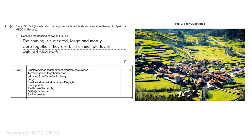When it comes to answering with two marks, that means two unique features — but you can write quite a long sentence covering loads of different features to make sure you get all the marks. For example: 'The housing was nucleated, large, and mostly close together. They are built on multiple levels with red tiled roofs.' That covers all the required points.